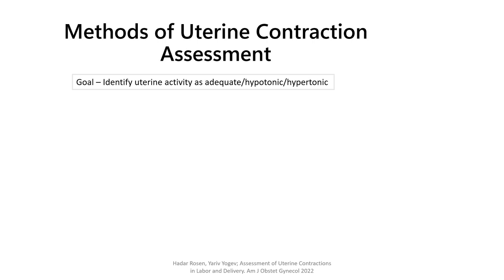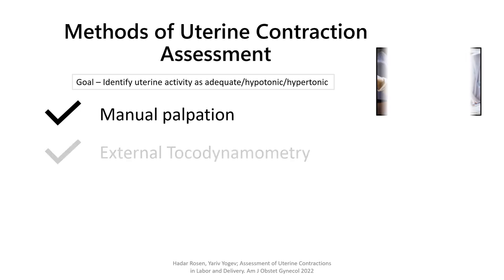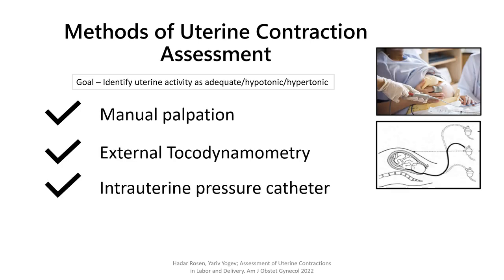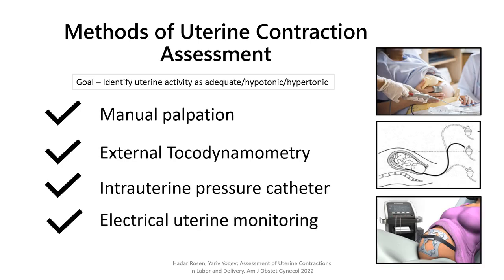The methods include manual palpation, external tocodynamometry, intrauterine pressure catheter, and electrical uterine monitoring.